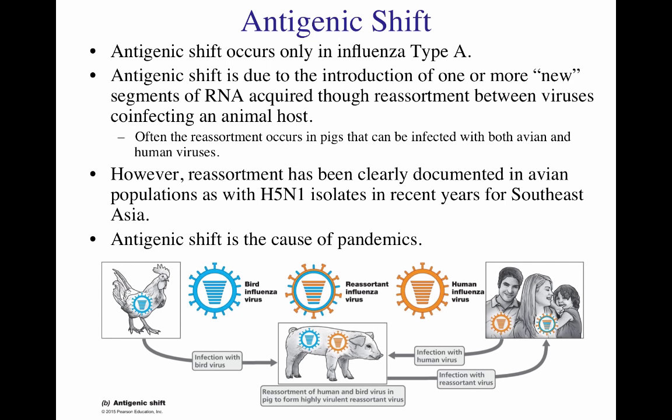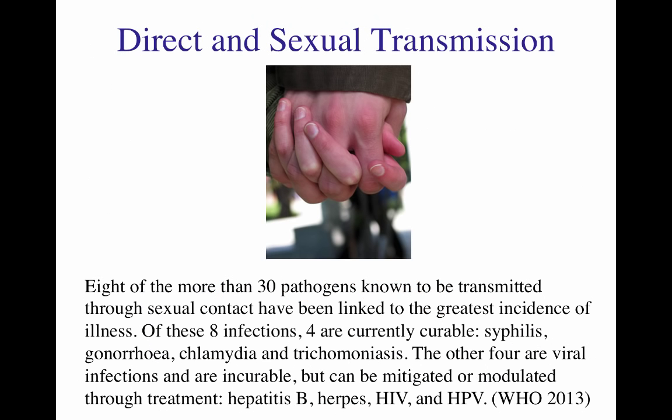Now let's move to sexual and direct transmission. According to a 2013 WHO report, of the more than 30 pathogens known to be transmitted through sexual contact, eight are linked to the greatest incidence of illness — four bacterial and four viral.